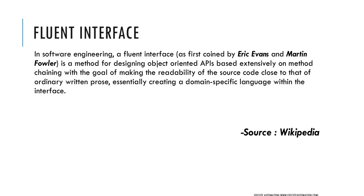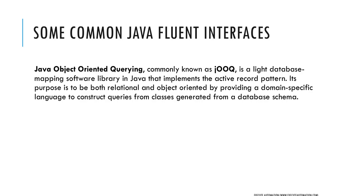This concept was coined by Martin Fowler and Eric Evans, and the definition is taken from Wikipedia — you can search for fluent interface to understand how it works. We're not going to deep dive into the theoretical part, but we're going to implement it within our code. One of the common Java fluent interface examples is JOOQ, or Java Object-Oriented Querying — you can search for that to understand how it's actually written.